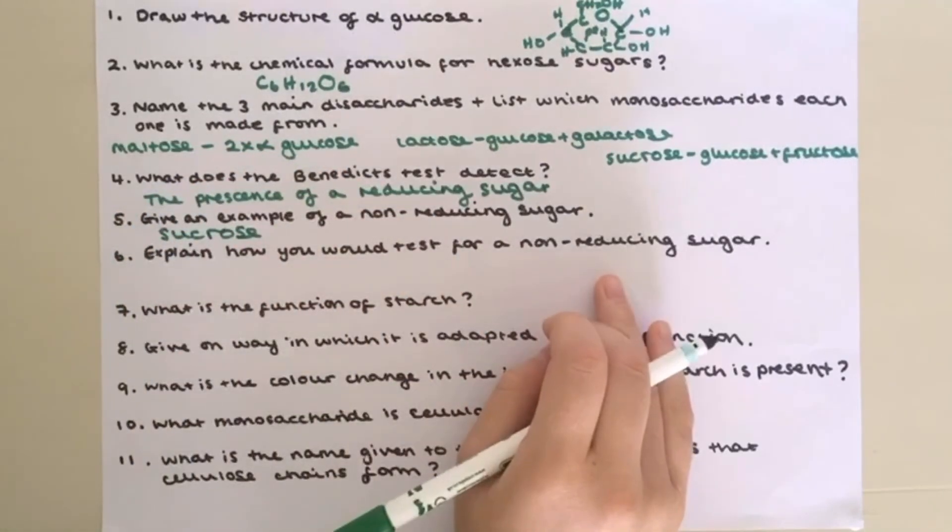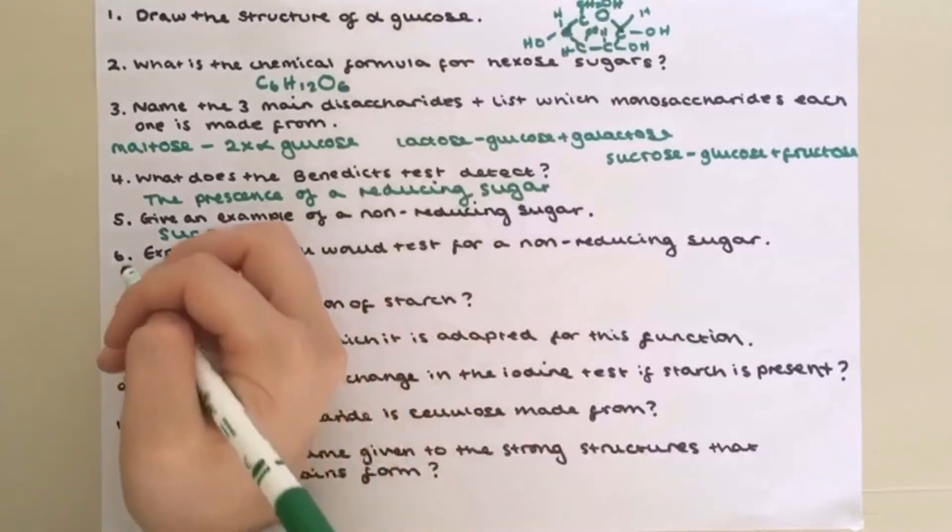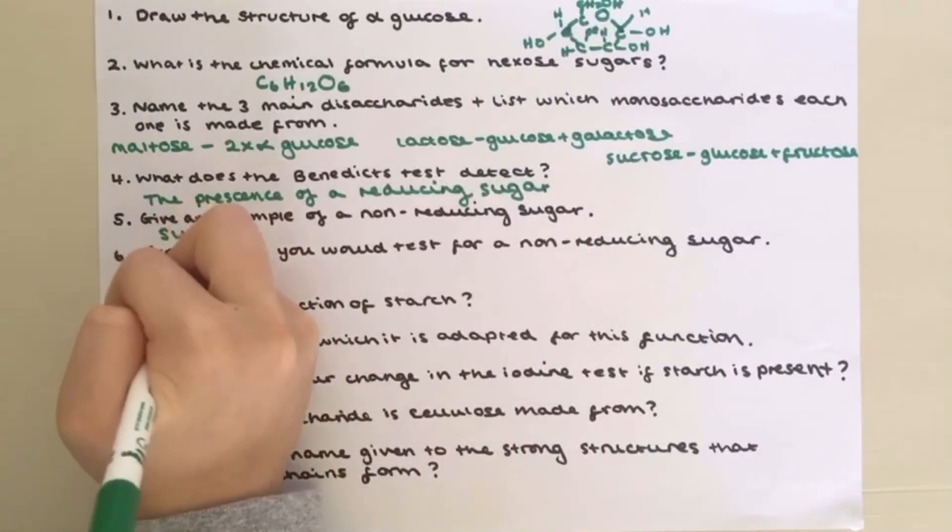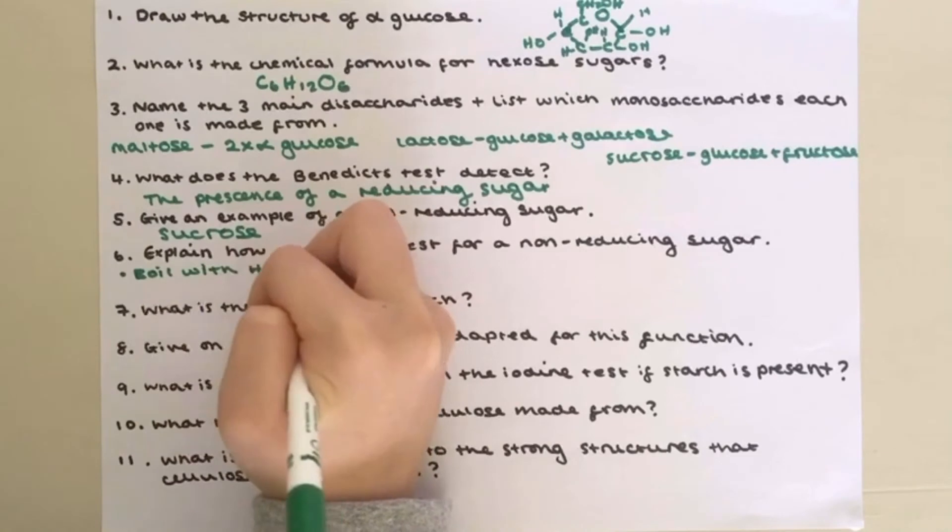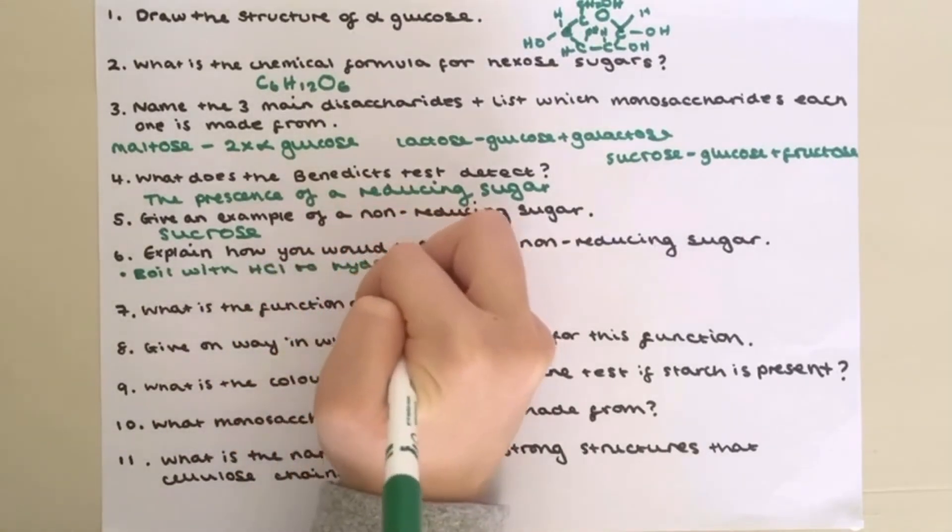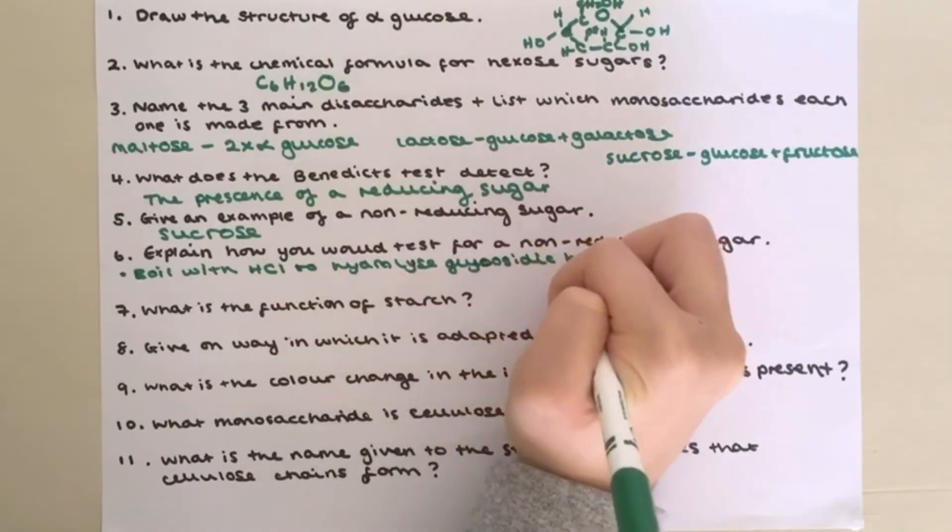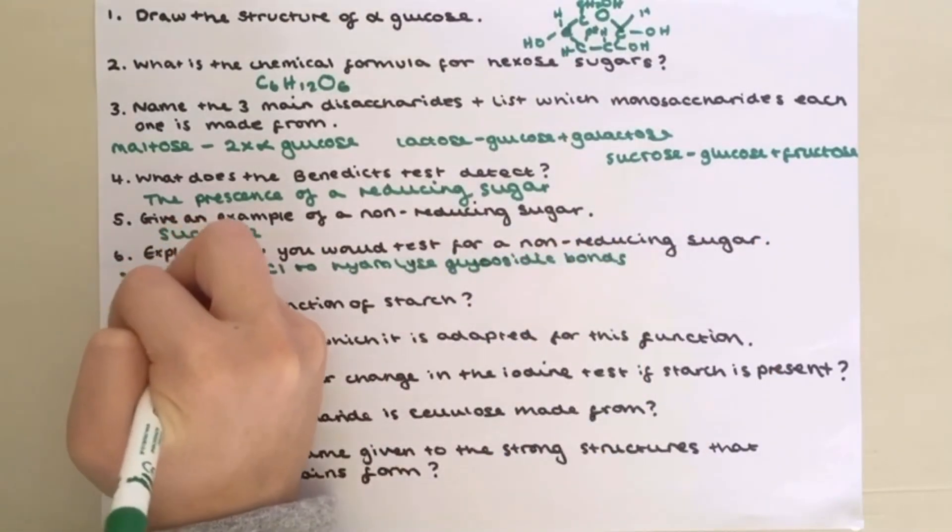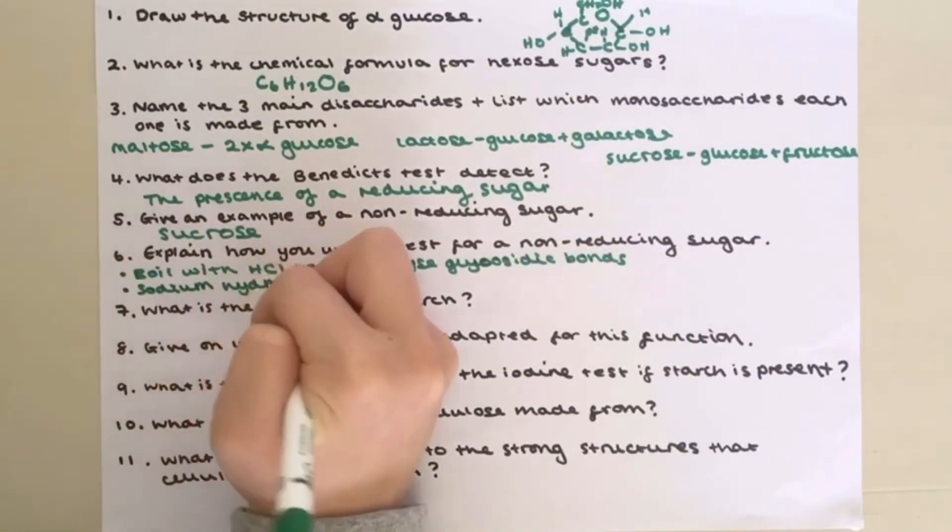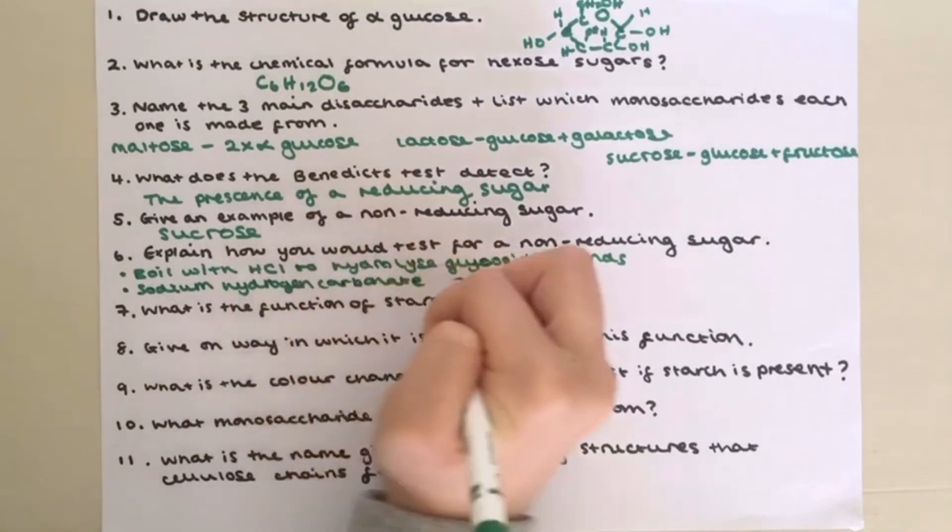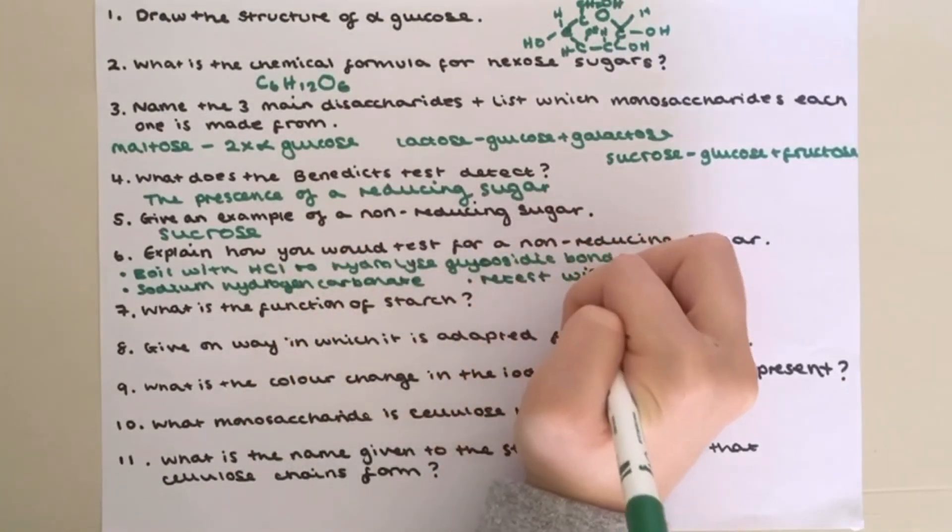Explain how you would test for a non-reducing sugar. So firstly what you need to do is you boil your sample with dilute HCl for a few minutes to hydrolyze the glycosidic bonds. Then you need to neutralize the HCl with sodium hydrogen carbonate and finally test with Benedict's solution.